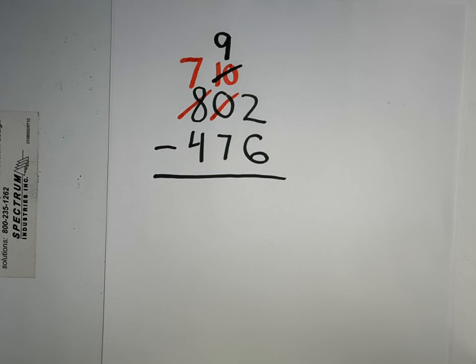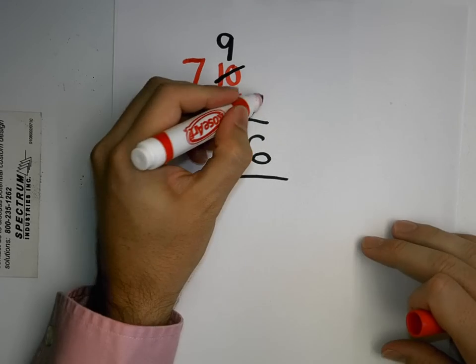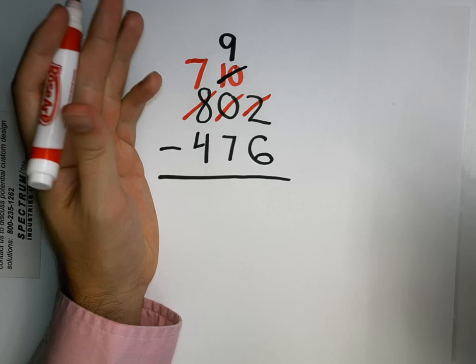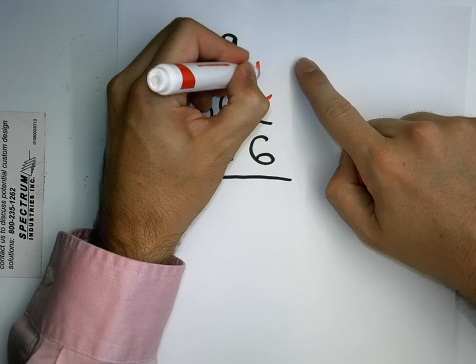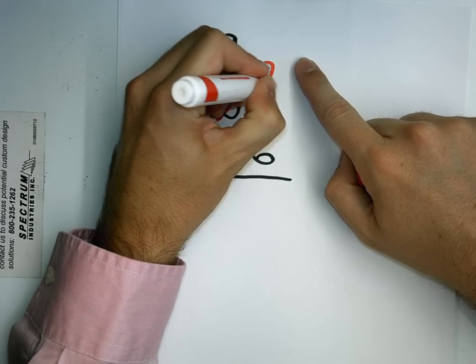And since I'm going to move one of those groups of 10 over to my ones, one group of 10 is just 10 ones. So I had two ones. 10 more ones is now 12.